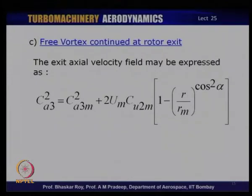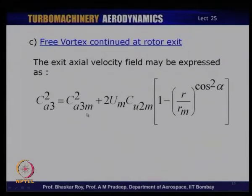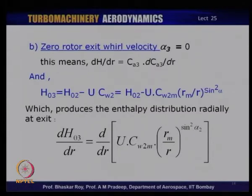The third condition is the free vortex law applied at the rotor exit. Invoking free vortex laws at the rotor exit gives C_A3² = C_A3m² + 2·U_m·C_W2m · [1 + (r/r_m)^(cos²α₂)]. This expression is valid for this particular case, meaning the C_A variation in case B is very similar to that in case 3. The actual velocity variation can be found using the laws prescribed.